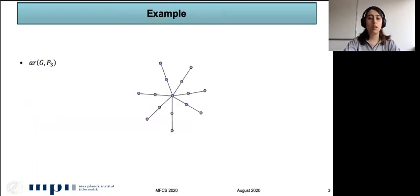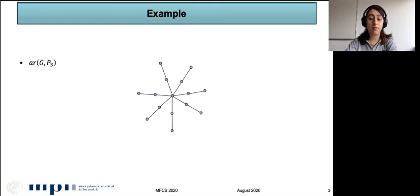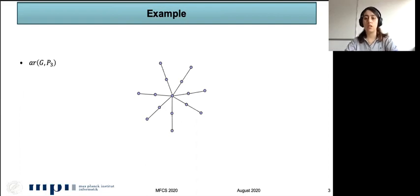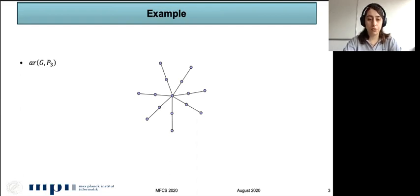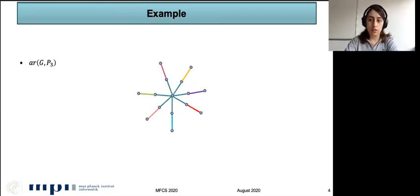Let's see an example. Consider this graph as our given graph G. We have seven paths of length two, which are incident at a vertex we call the center. We want to find the anti-Ramsey number of this graph and P3, so we don't want to have a rainbow P3. We want to find the maximum number of colors in which we don't have any rainbow P3. You can see that this is a valid coloring with eight colors — we don't have any rainbow P3 here.